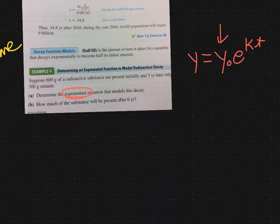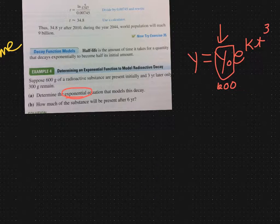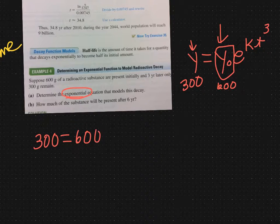Now what we're going to do is we're going to fill in to this formula everything that we know. Let's look at the problem again. Suppose 600 grams of a radioactive substance are present initially. The Y naught is your initial amount, so that's going to be 600. We know that. And three years later, three would be my t, only 300 grams remain. The end amount, this Y, is going to be 300. So from that sentence, we have this: 300 is equal to 600e to the 3 times k.